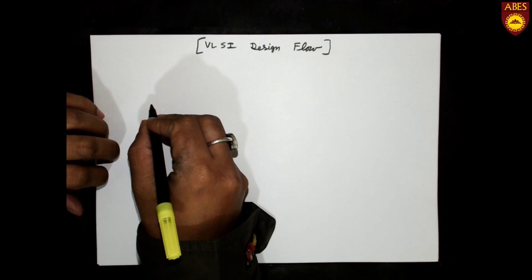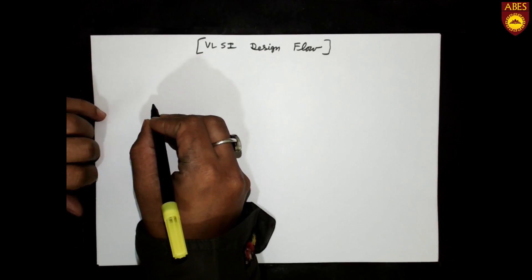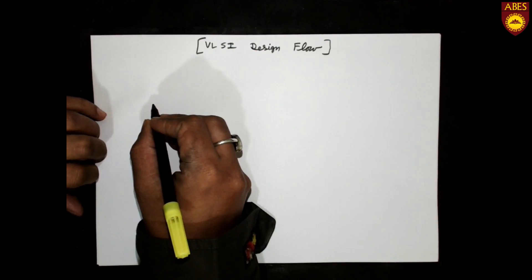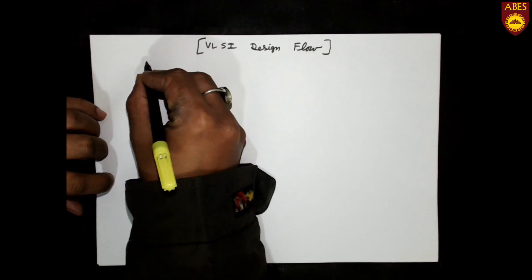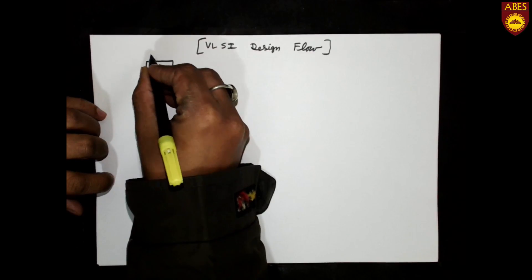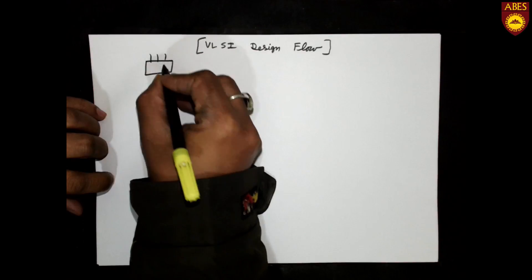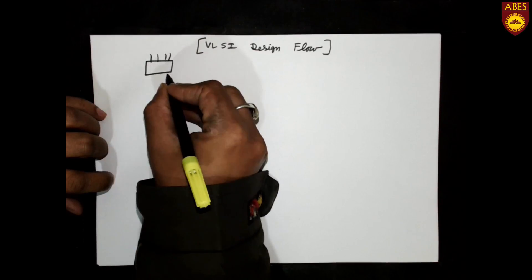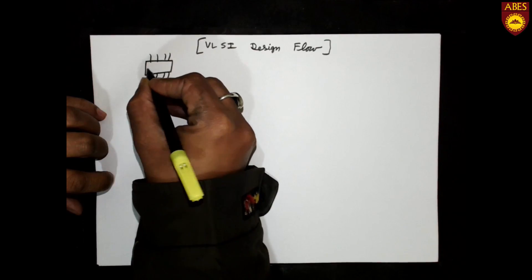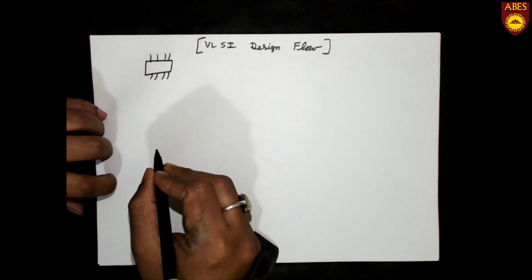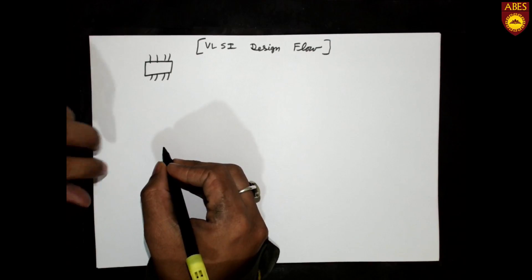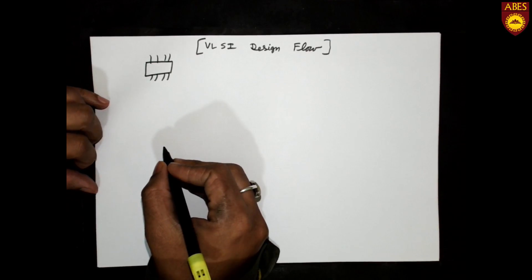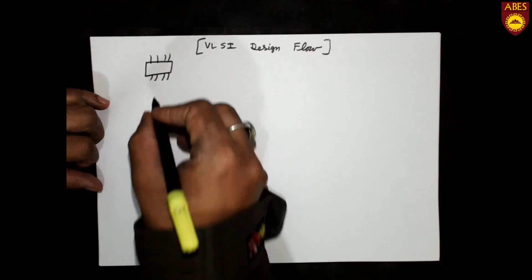Let's discuss the VLSI design flow — basically how we manufacture any IC and what are the design steps to manufacture any IC in the VLSI domain.